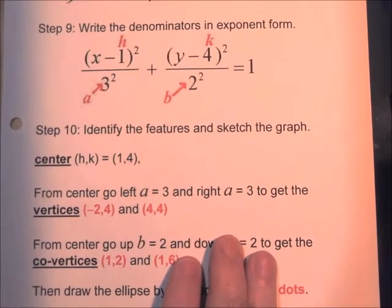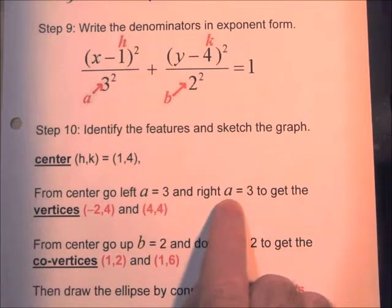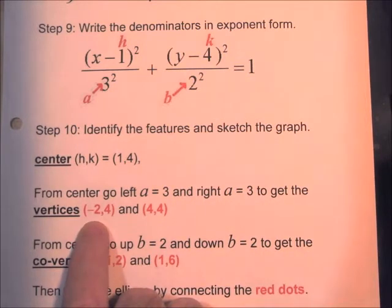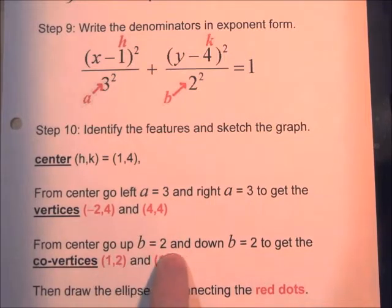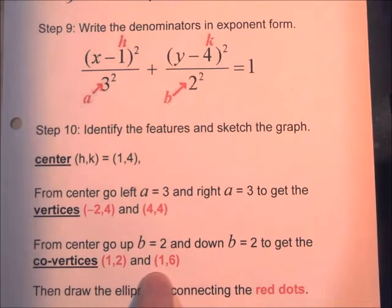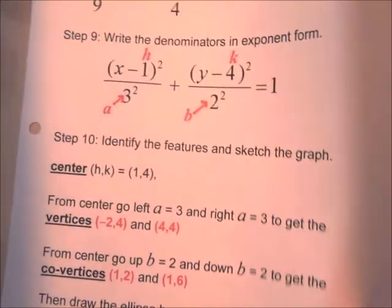The center of the ellipse is (h, k) = (1, 4). From the center, we go a equals 3 to the left and 3 to the right to get the vertices: (negative 2, 4) and (4, 4). From the center, we go b equals 2 up and 2 down to get the co-vertices: (1, 2) and (1, 6). Then we connect the dots to draw the ellipse.